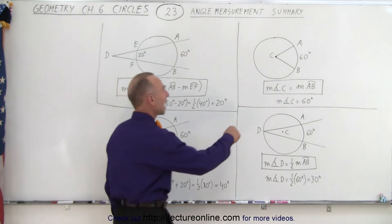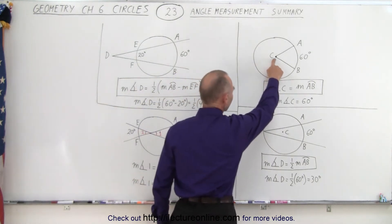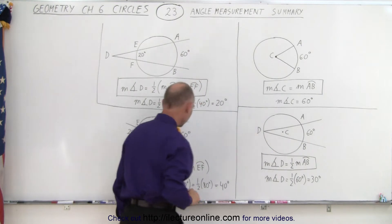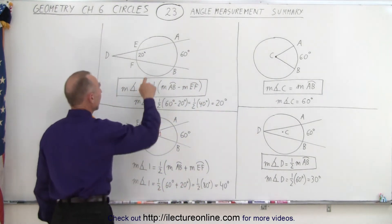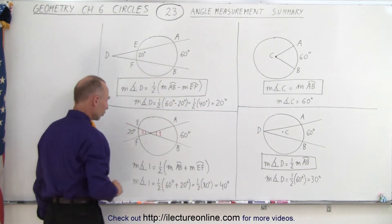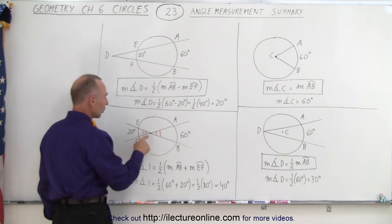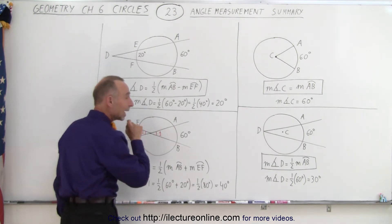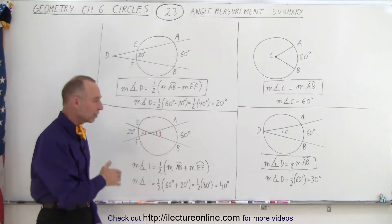We can have the angle with the point at the center of the circle. We can have an angle with the point on the edge of the circle. We can have an angle with the point outside the circle, or we can have an angle with the point inside the circle, but not at the center or at the edge of the circle.